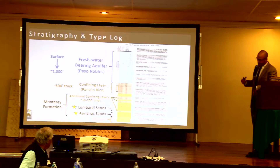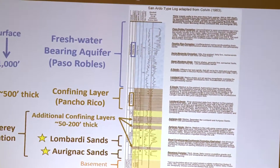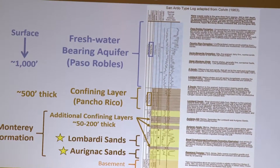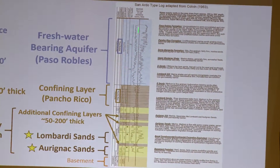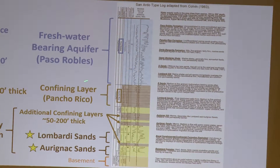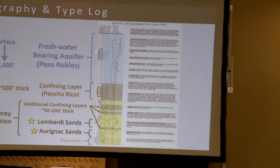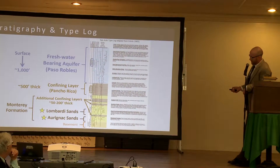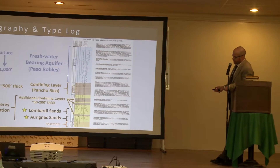It's important to give an overview of the geology, and this is what's known as a type log. It shows the general geology throughout the field. At the top, we have this light blue unit representing the Paso Robles formation. This is the shallowest formation, and it is freshwater bearing. There are a number of water wells drilled into this Paso Robles formation, typically to depths not exceeding 500 or 600 feet.